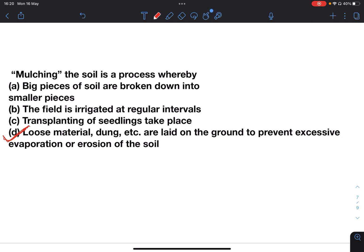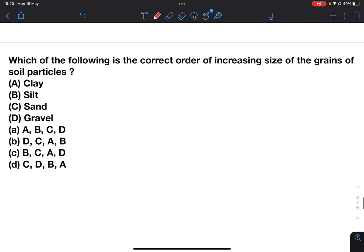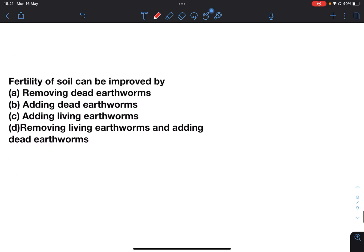Next: Which of the following is the correct order of increasing size of the grains of soil particles? Options include different orders of clay, silt, sand, and gravel. Answer will be A: clay, silt, sand, gravel.